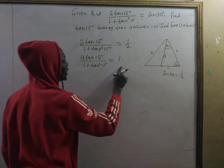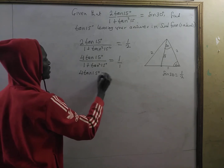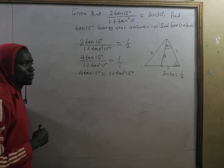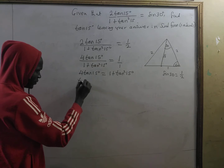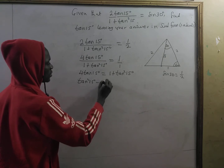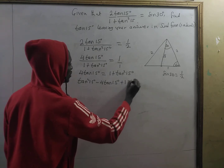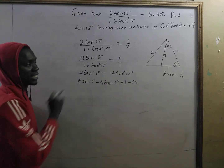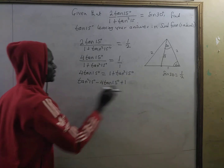Cross-multiplying, four times tangent of 15 degrees is equal to one plus tangent squared of 15 degrees. Bringing all terms to one side, we have tangent squared of 15 degrees minus four times tangent of 15 degrees plus one is equal to zero.